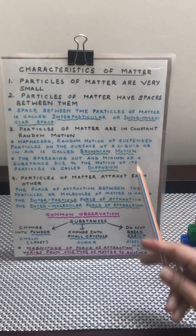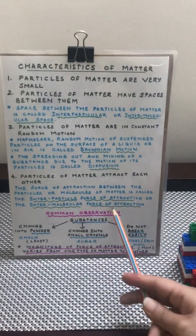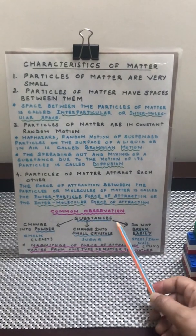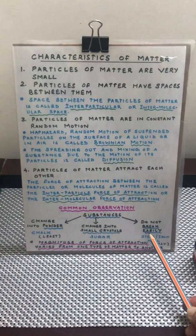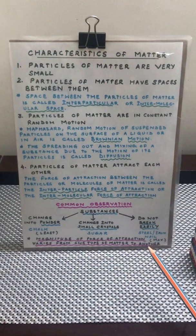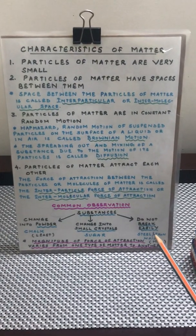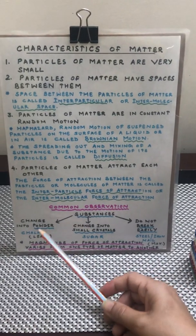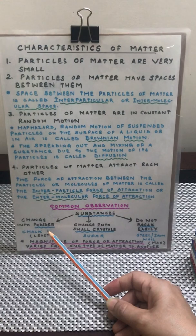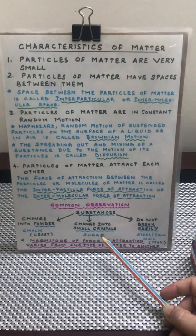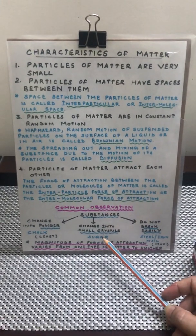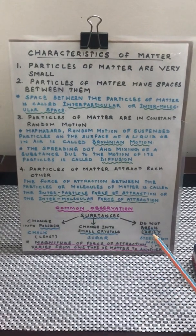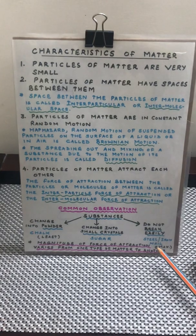These are three different types of substances — they are all solids, but they vary in the force of attraction between their particles. A chalk piece can easily become powder if you apply pressure. Sugar, even under pressure, the finest particle will still be in the form of a crystal. On the other hand, if you want to crush or break steel, it is not going to be easy.